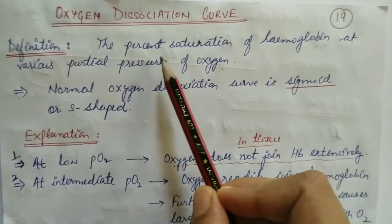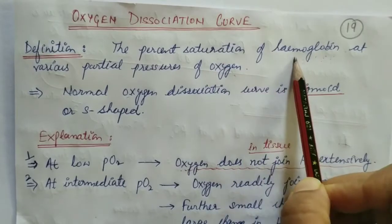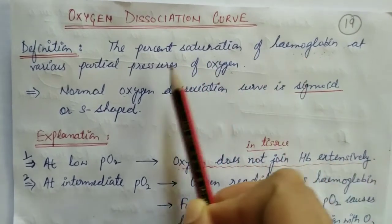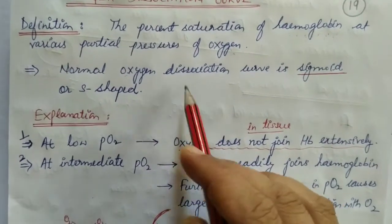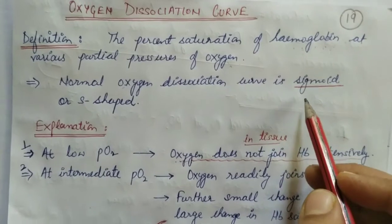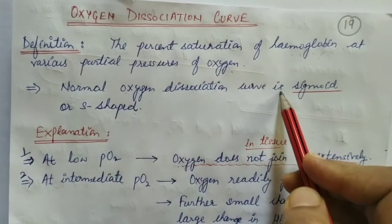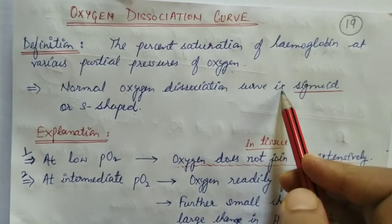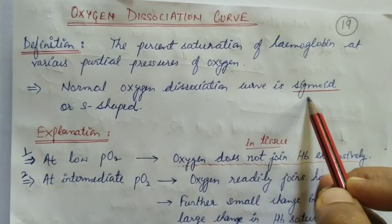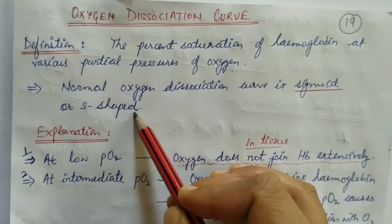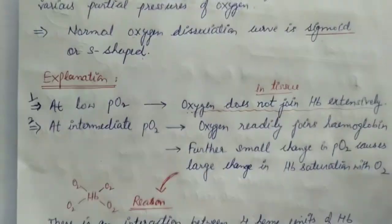What is the oxygen dissociation curve? It actually represents the percent saturation — how much hemoglobin will be saturated at different partial pressures of oxygen. If we draw this as a curve, it comes out in a sigmoid shape or S-shape. And sometimes this is asked in one word — what is the shape of the normal oxygen dissociation curve? So the shape is the S-shape or sigmoid shape. Now we will explain this.